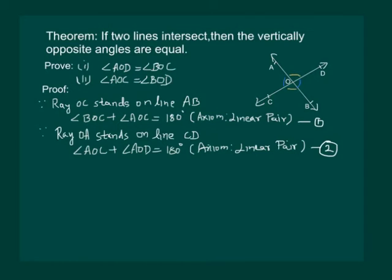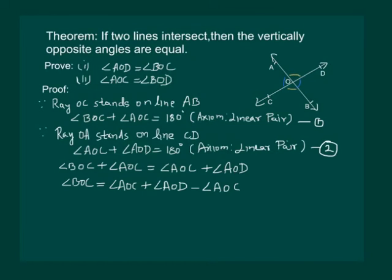Now both of them are equal to 180 degrees. Means they should be equal. So let us write it by equating both the sides. We can see that angle AOC is on both the sides. So let us transport one of the AOCs to the other side. Now we have AOC minus AOC. They will get cancelled.